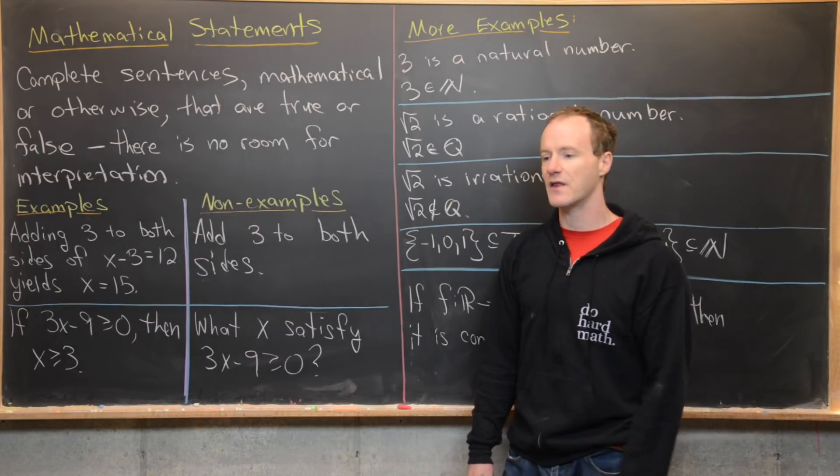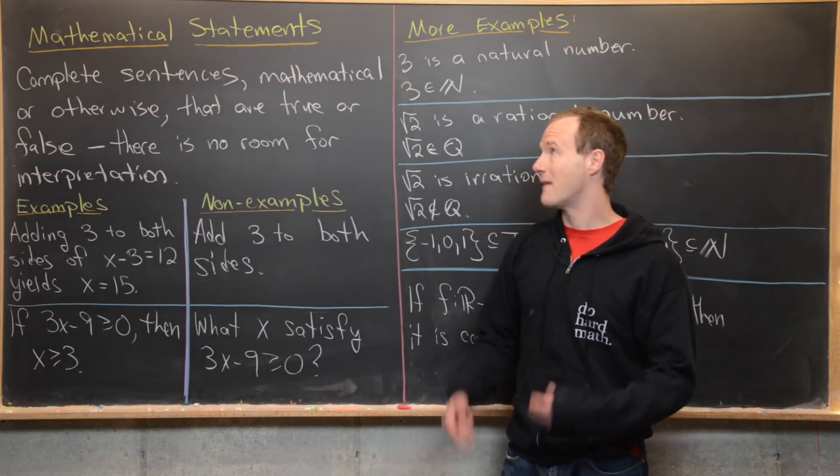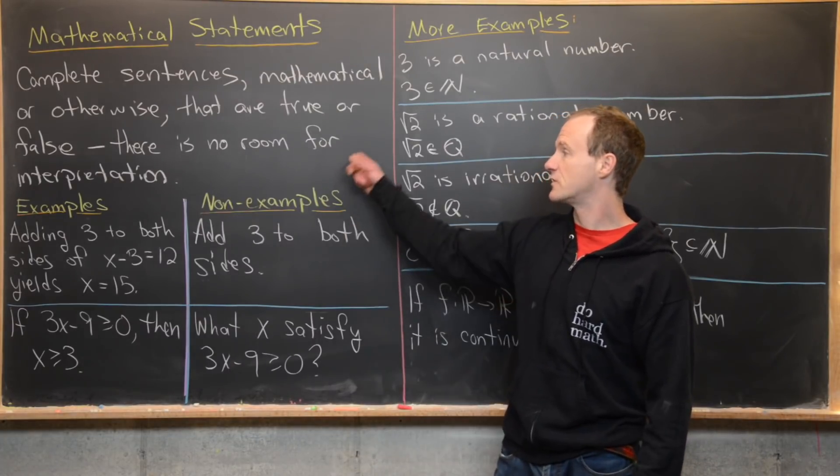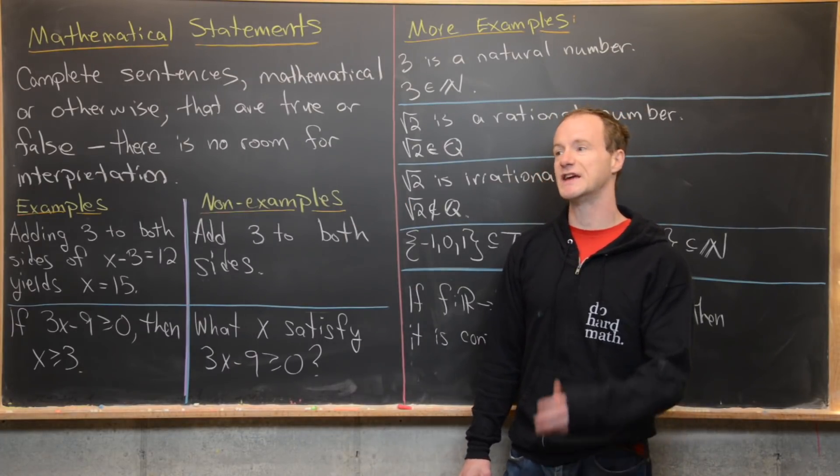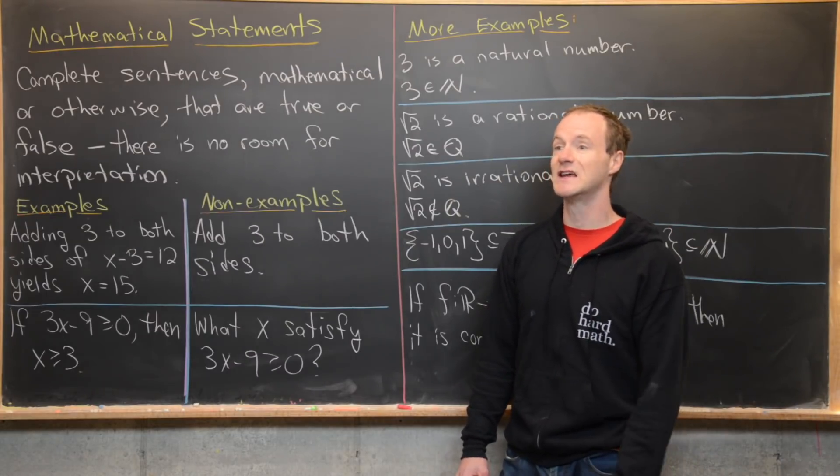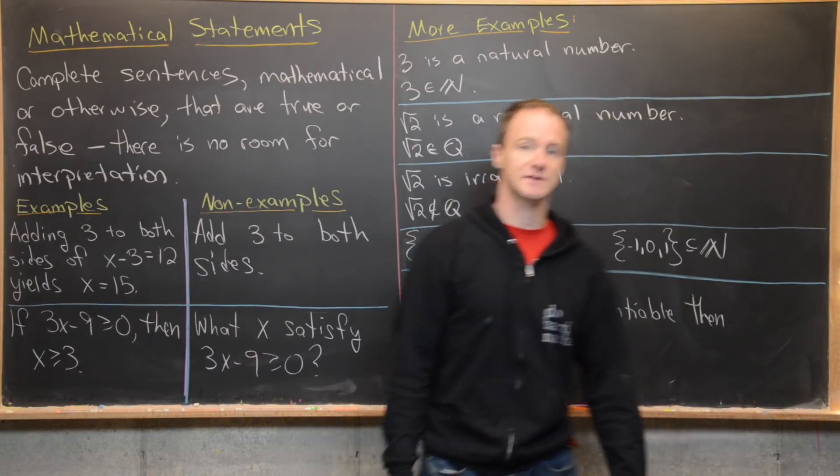I want to point out that when we're writing our proofs, we want to use all mathematical sentences. There should be no room for interpretation in terms of the truth or the falseness in the sentences within your proofs.